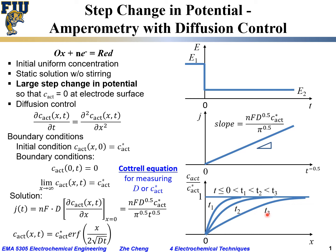With increasing time T3 > T2 > T1, the concentration gradient at the surface becomes shallower, resulting in a lower current. This is the principle of amperometry: measurement of current with time under a constant potential step. When the system is in the diffusion-controlled regime, we have this analytical solution.